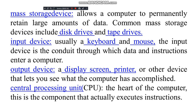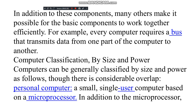Output devices — a display screen, printer, or other device — let you see what the computer has accomplished. The central processing unit is the heart of the computer; it is the component that actually executes instructions. In addition to these components, many others make it possible for the basic components to work together efficiently.